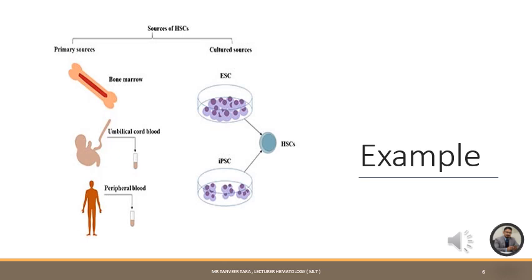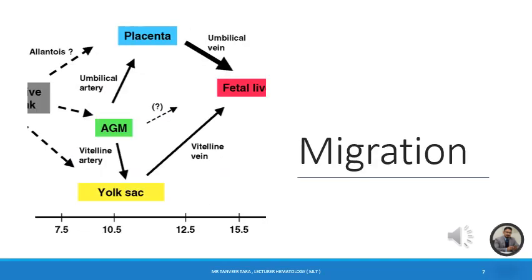This example clearly illustrates the symmetric and asymmetric division of cells. Hematopoietic stem cells have the capability of self-renewal and can also move forward to mature and differentiate into daughter cells. We have established that hematopoiesis is both prenatal and postnatal.